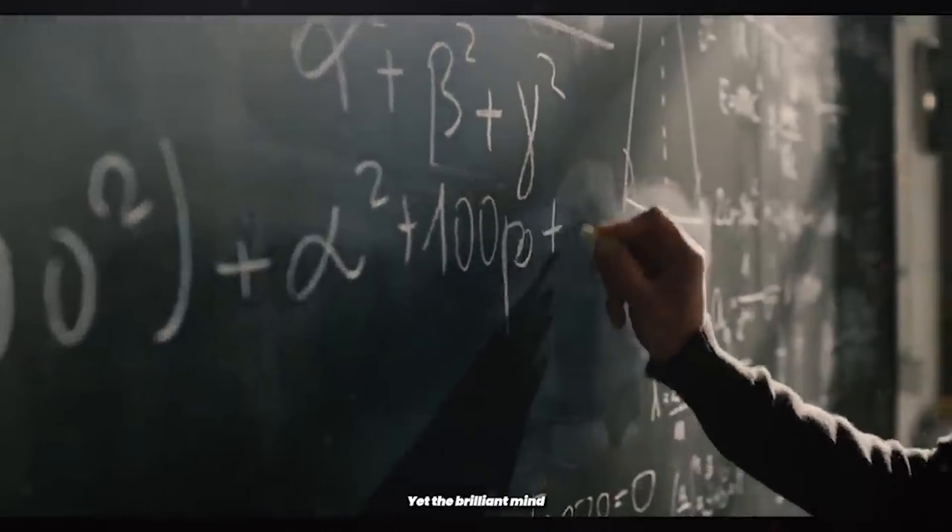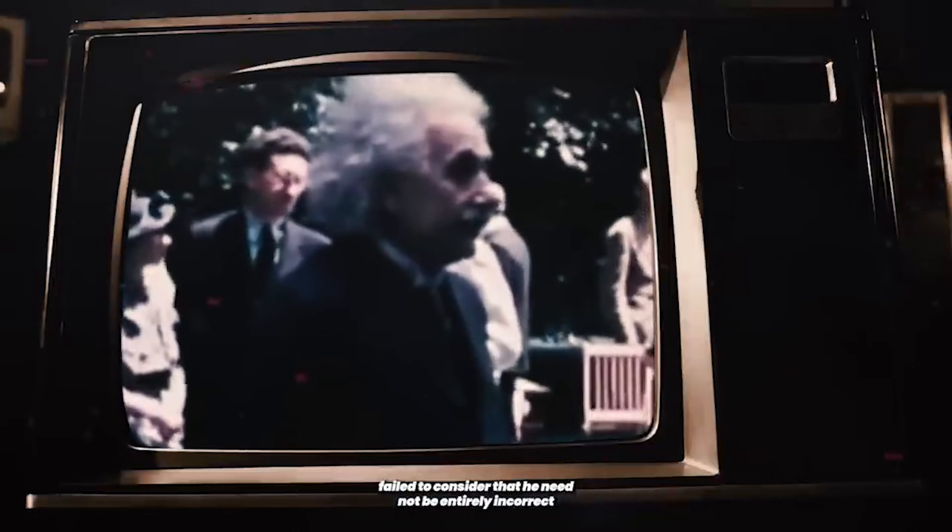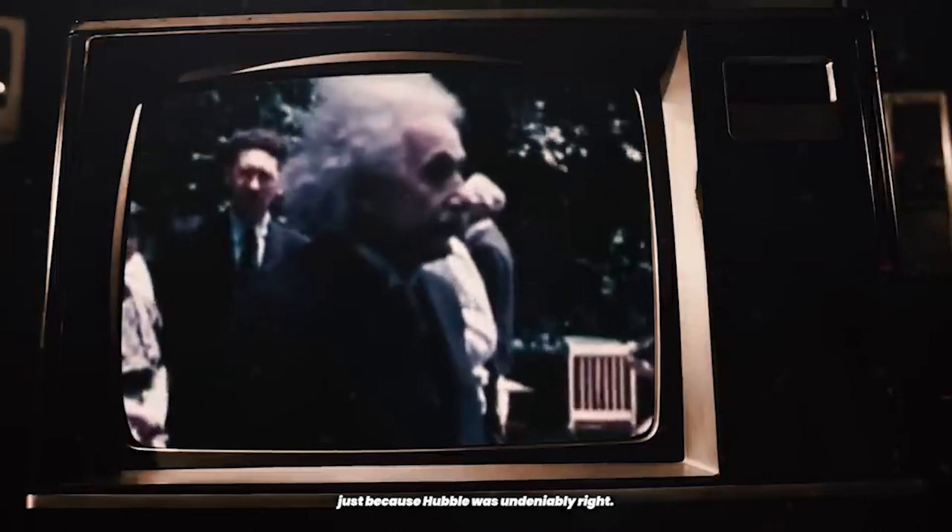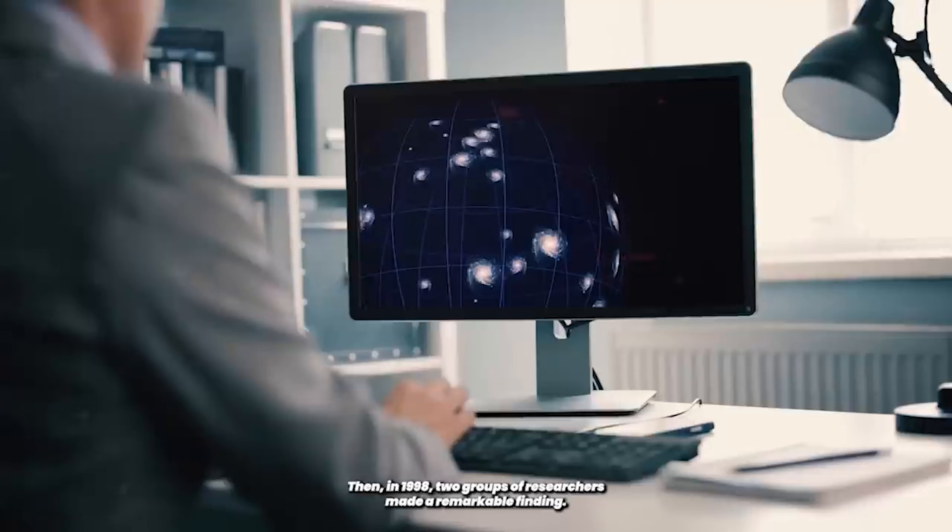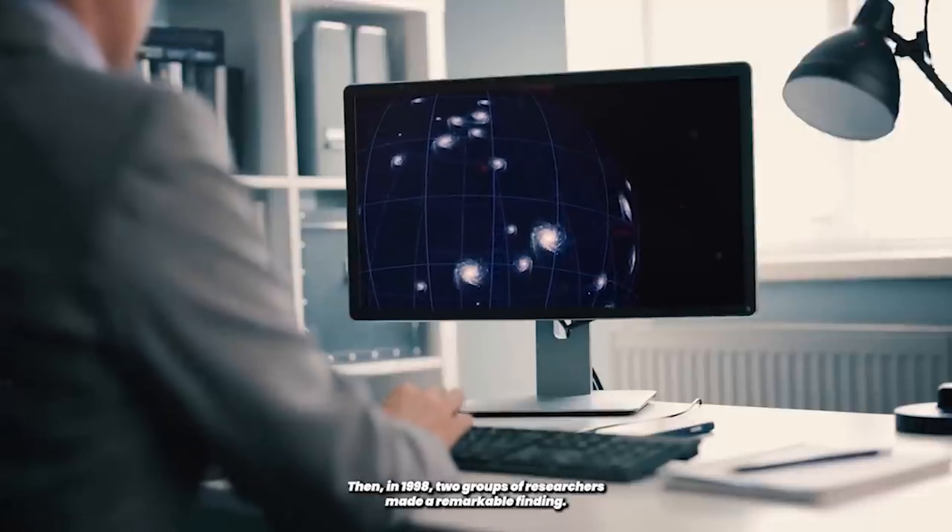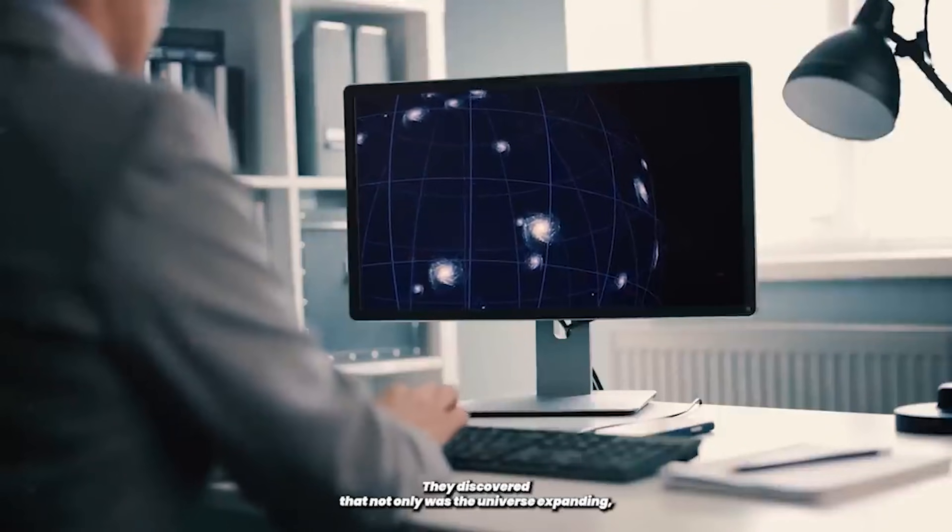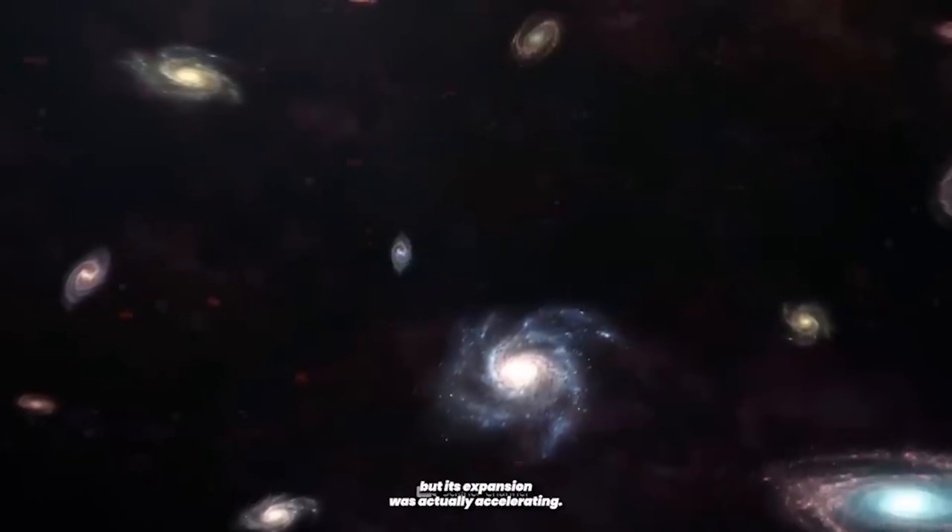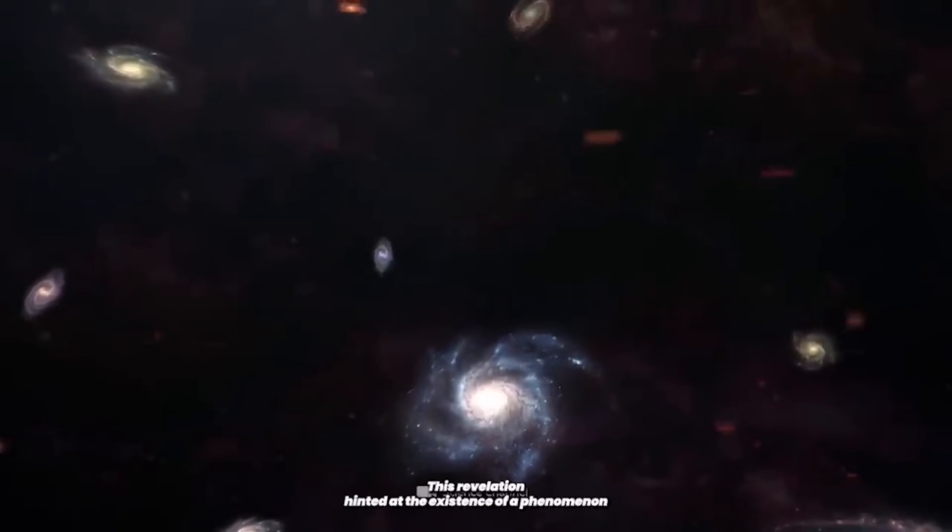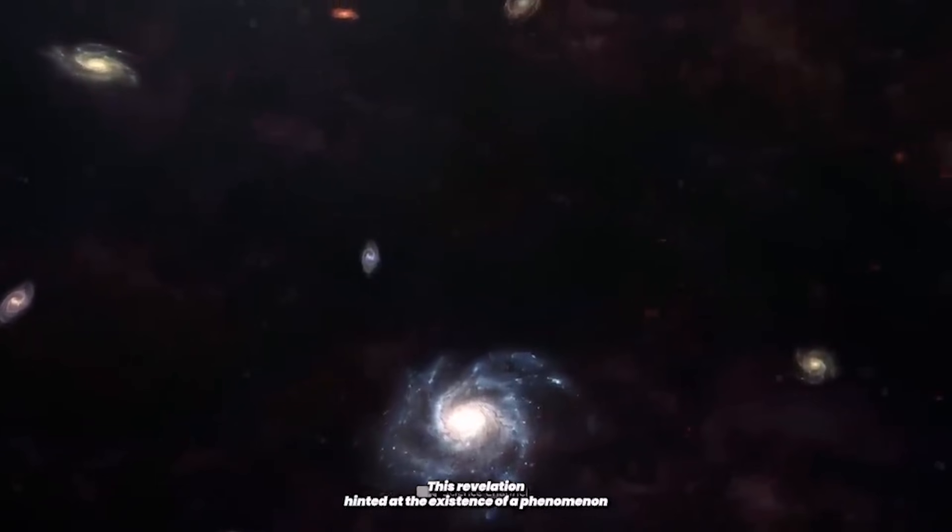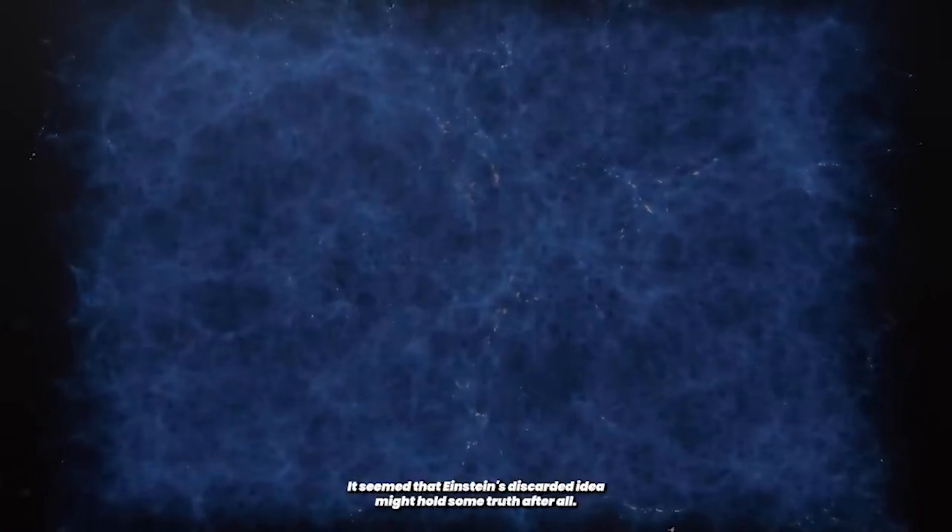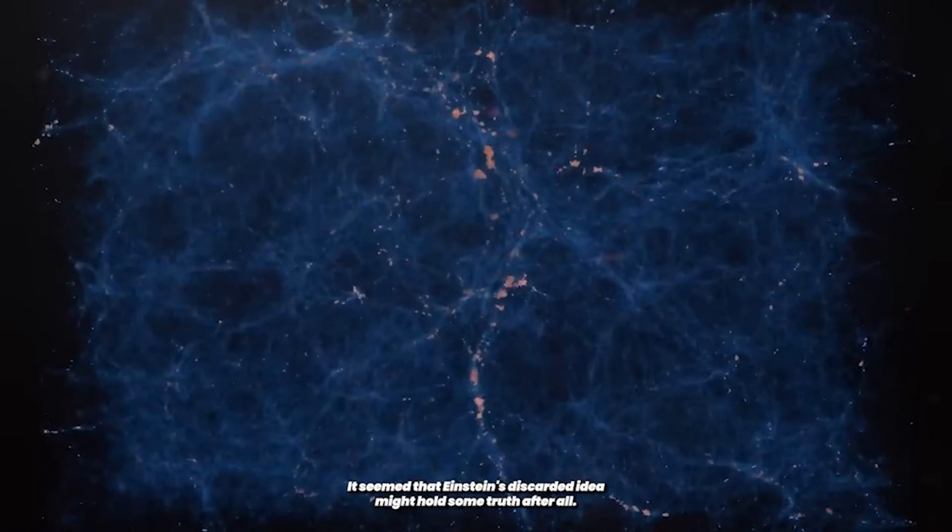Yet, the brilliant mind failed to consider that he need not be entirely incorrect, just because Hubble was undeniably right. Then, in 1998, two groups of researchers made a remarkable finding. They discovered that not only was the universe expanding, but its expansion was actually accelerating. This revelation hinted at the existence of a phenomenon akin to Einstein's cosmological constant, which became known as dark energy. It seemed that Einstein's discarded idea might hold some truth after all.